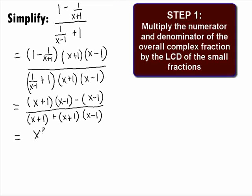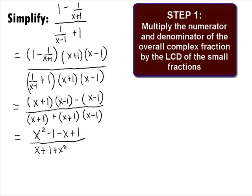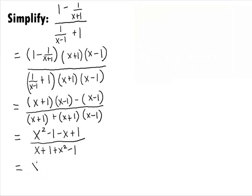Multiplying the numerator out, we get x squared minus 1 minus x plus 1. Multiplying the denominator out, we get x plus 1 plus x squared minus 1. Combining our like terms, we get x squared minus x in the numerator over x squared plus x.